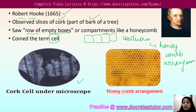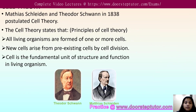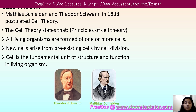Further to Robert Hooke, there were different theories given about cells. The main cell theory was proposed by Schleiden and Schwann — Matthias Schleiden and Theodor Schwann — who gave us the cell theory.